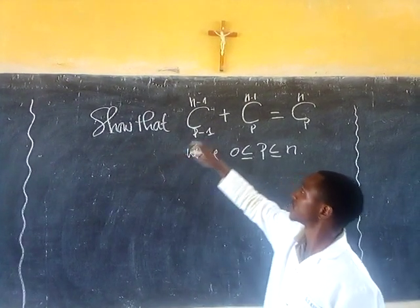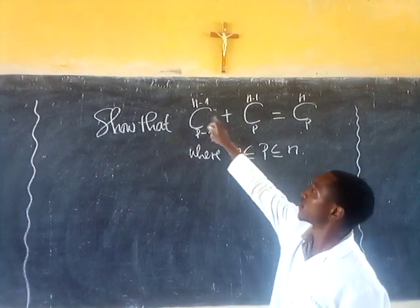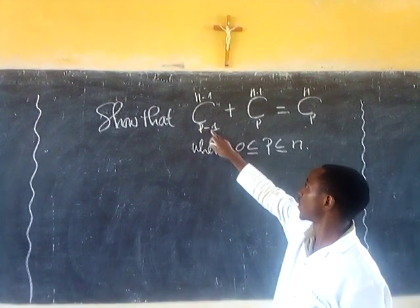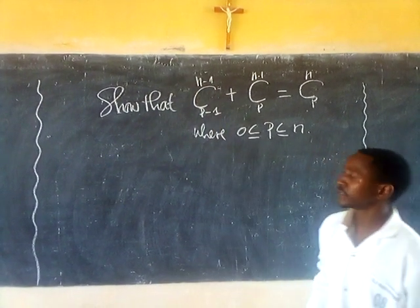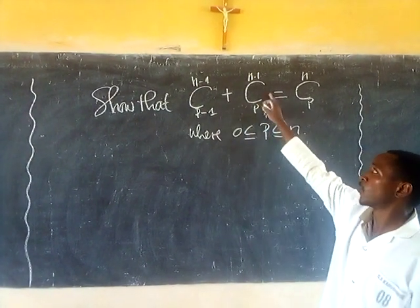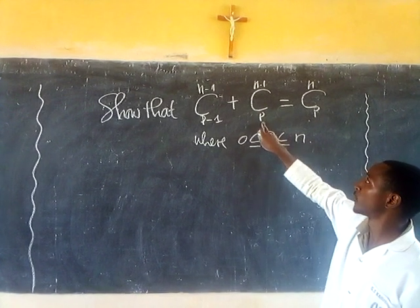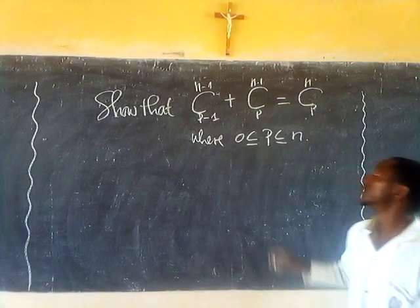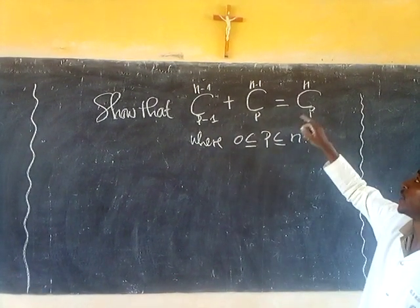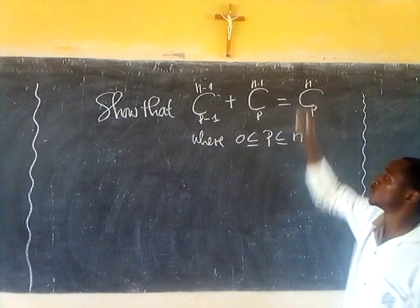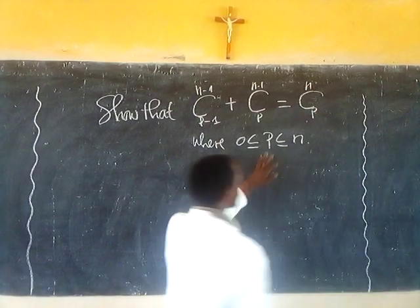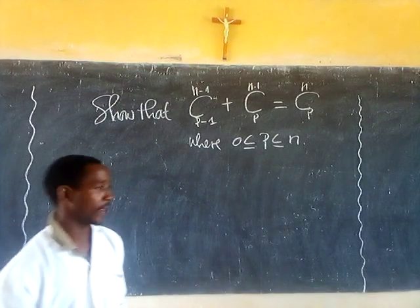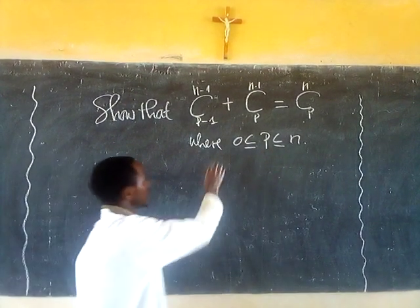That combination C(P-1, N-1) plus C(P, N-1) is equal to C(P, N), where the value of P is between 0 and N.